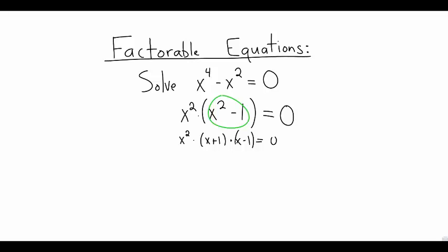Now we have a product equal to zero. The zero product property tells us that a product equals zero only when one of the factors is zero.